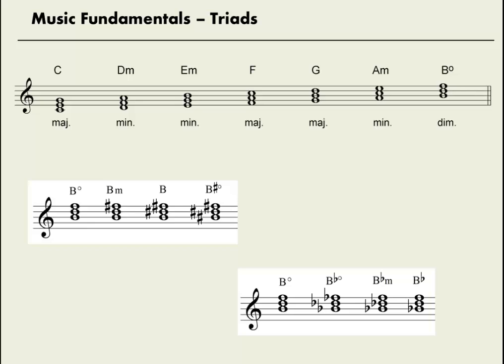I advise students to memorize a couple of the B chords besides just B diminished. So if you know B major — B, D sharp, F sharp — and you know B flat major — B flat, D, F — you can go pretty quickly to any of the other spellings.